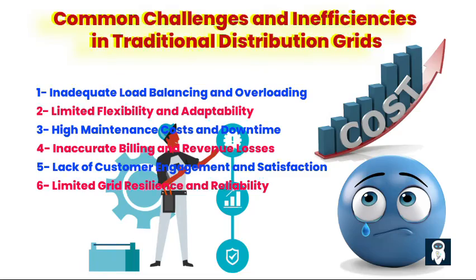Three: High maintenance costs and downtime. Maintenance of aging infrastructure in traditional distribution grids can be costly and time-consuming. As equipment reaches the end of its service life, the risk of failures and unplanned outages increases, impacting the reliability of the grid and incurring additional expenses.